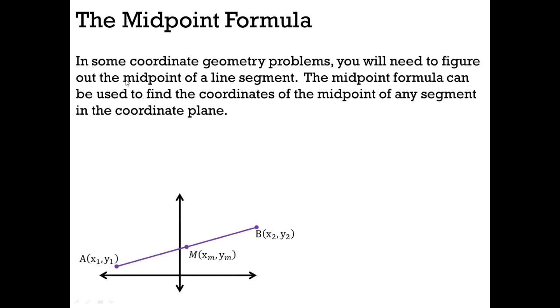Let's say we have this segment here. We've got point A, and we just give it generic coordinates, x1, y1. And then we've got point B, x2, y2. And then we've got this midpoint, xm, ym. How do we find out where that is?